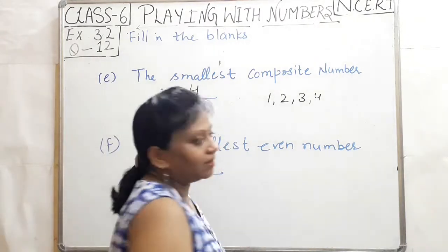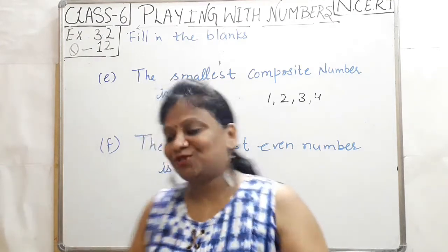Next, the smallest even number. The smallest even number is two.